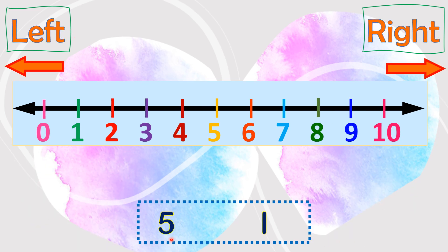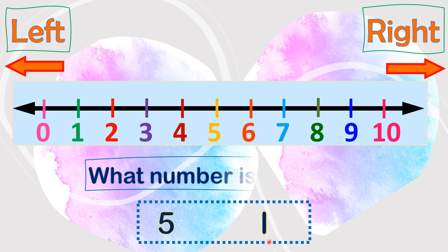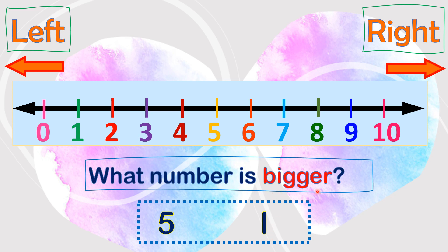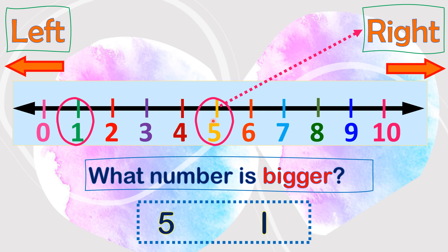We have 5 and 1. What number is bigger? Let us circle 5 and 1. As you can see, 5 is at the right side, and 1 is at the left side. We say that numbers at the right side are bigger. Therefore, 5 is the bigger number.